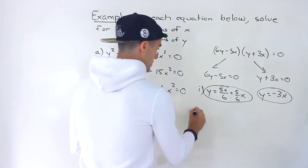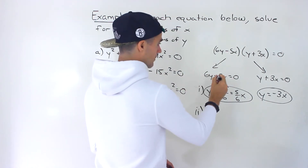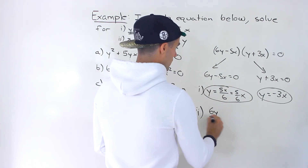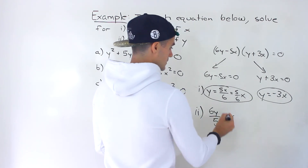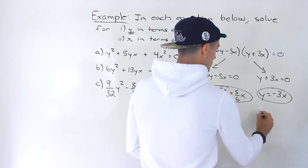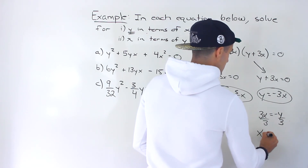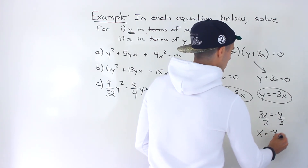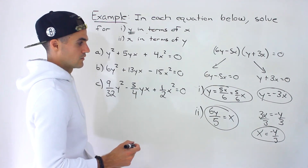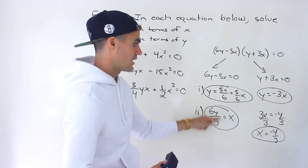Now if we solve for x in terms of y: from 6y minus 5x equals 0, we bring negative 5x over, isolate x, and divide both sides by 5, giving x equals 6y over 5. From y plus 3x equals 0, we bring y over to get 3x equals negative y, then divide by 3, giving x equals negative y over 3. Those are the two solutions for x in terms of y for part b.